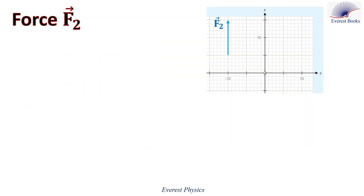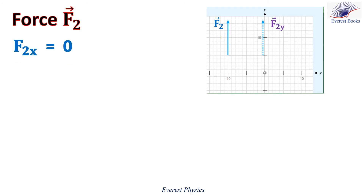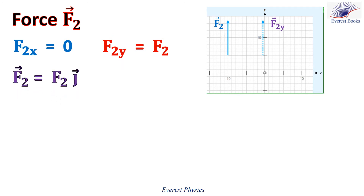Now let's find the component of the force F2. As you see, F2 is parallel to the y axis, so F2 has no component along the x axis. Then F2x equals zero. F2 is oriented along the positive y axis, so the y component of F2 equals F2. Therefore, the vector F2 equals F2 times j.